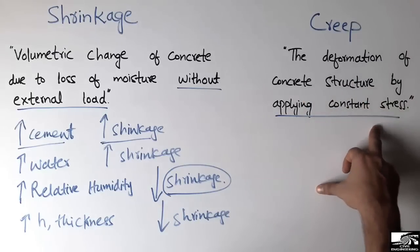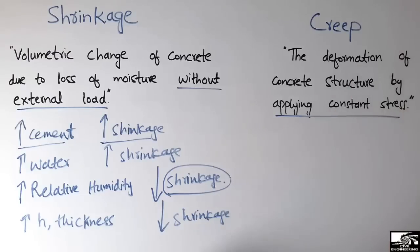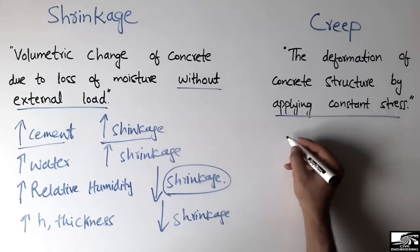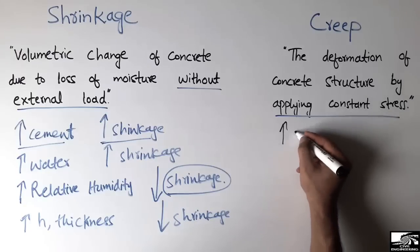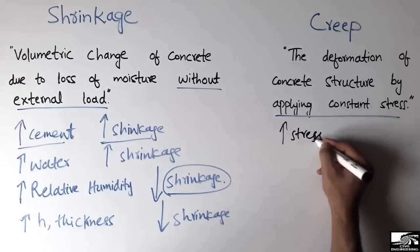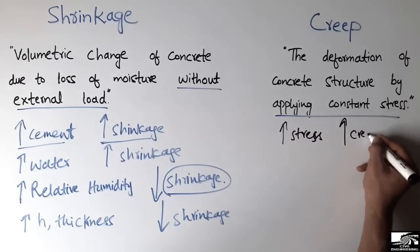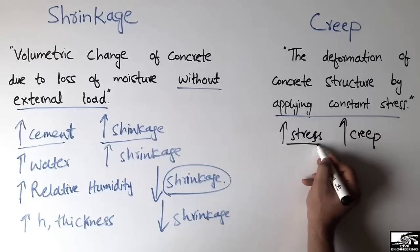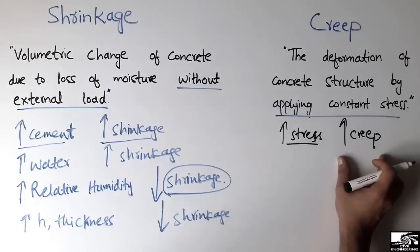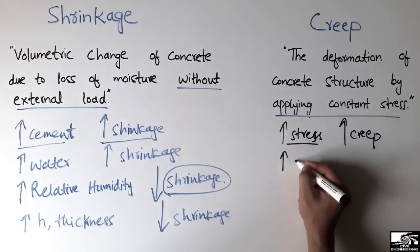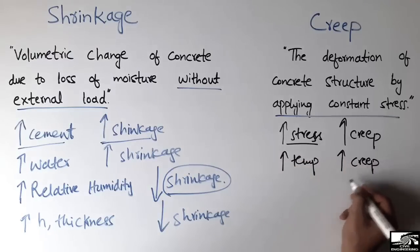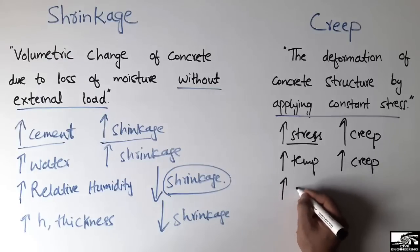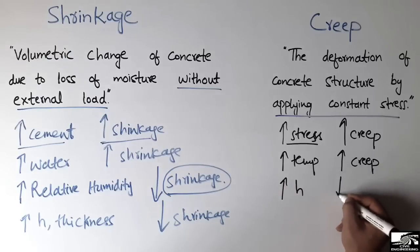For creep deformation, which is related to deformation under constant stress, there are also influencing factors. First, if we increase the magnitude of the applied constant stress, creep will also increase. Second, if we increase the temperature, creep tends to increase as well. Third, if we increase the thickness of the member, creep decreases.